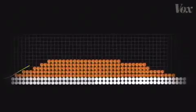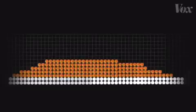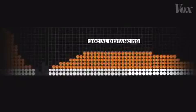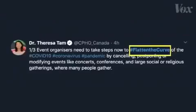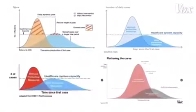This trend line gets flatter. These people can all get treatment, and fewer people die because of it. These are the two ways the COVID-19 pandemic can play out. But this one only happens if everyone does their part. And it's why experts and officials are urging people to flatten the curve by social distancing and staying home as much as possible.